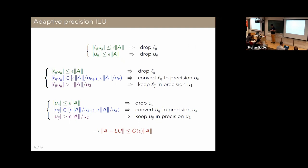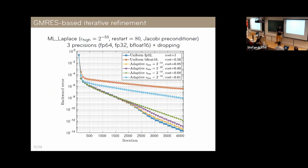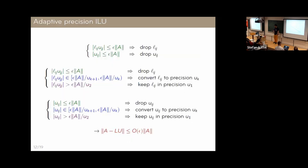This element-wise approach is perhaps most useful not on the original sparse matrix A but on preconditioners. The large iteration count in the previous example was due to using a simple preconditioner — in practice we want better preconditioners. So the natural extension is to apply adaptive precision to ILU. The math is the same: we use the bucket construction, dropping the very smallest elements but switching intermediate ones to lower precision rather than dropping them, and we can prove this achieves a controlled backward error.